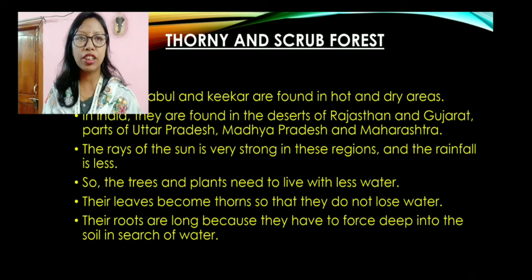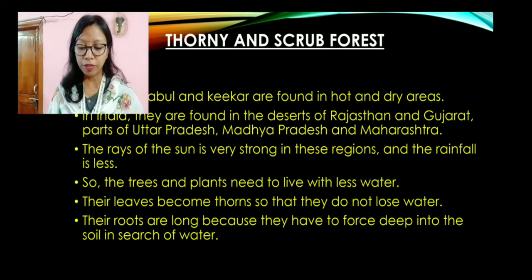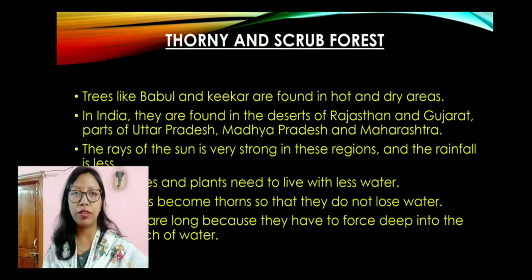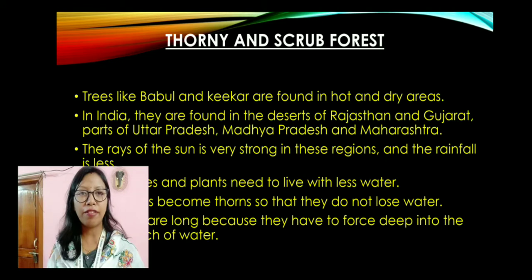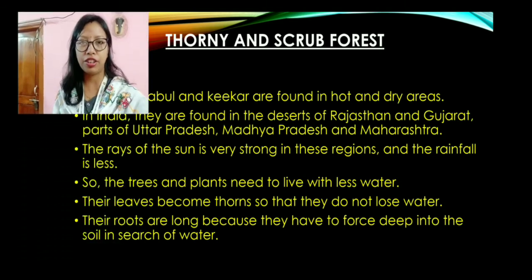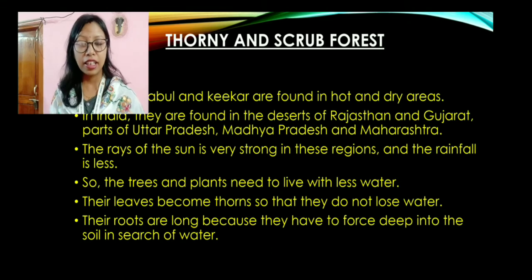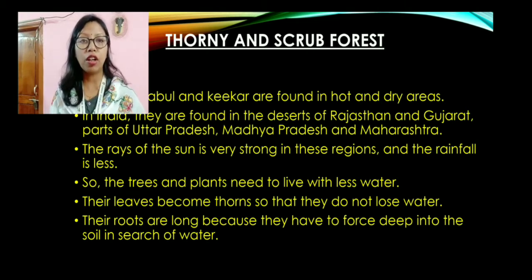Now let us come to the thorny and scrub forest. The name itself suggests they are found in the desert areas. Trees like Babul and Kikar are found in hot and dry areas. In India, they are found in the desert of Rajasthan and Gujarat, parts of Uttar Pradesh, Madhya Pradesh, and Maharashtra. The rays of the sun are very strong in these regions and rainfall is less. The trees and plants need to live with less water. Their leaves become thorns so that they do not lose water, and their roots are long because they have to go deep into the soil in search of water.